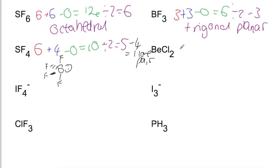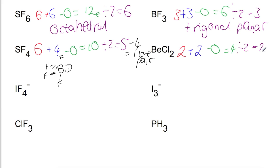For beryllium chloride (BeCl2), beryllium has two electrons in its outer shell. We add two atoms with no charge, giving four electrons. Dividing by two gives two electron pairs, so we have a linear arrangement.